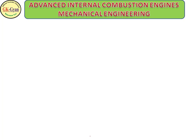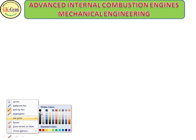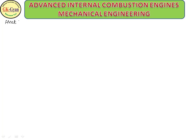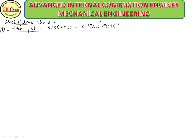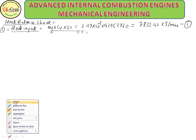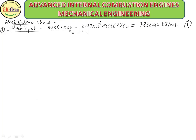Heat balance sheet calculation. First, heat input = m_f × CV × 60 = 2.972 × 10⁻³ × 43,953 × 60 = 7832.42 kJ/min. This is taken as 100%.